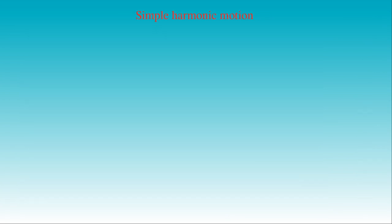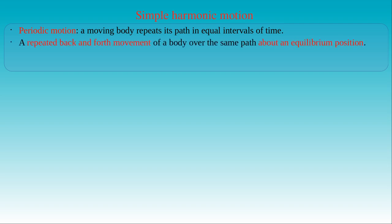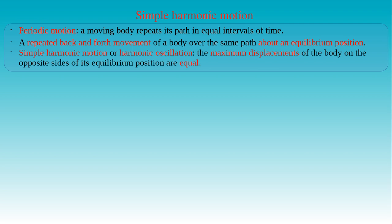Simple harmonic motion is a special case of periodic motion in kinematics. We talk about periodic motion if a moving body repeats its path in equal intervals of time. In the case of simple harmonic motion, a body performs a repeated back and forth movement over the same path about an equilibrium position. The maximum displacements of the body on the opposite sides of its equilibrium position are equal. This repeating motion with an equilibrium position between two turning points is also called harmonic oscillation. The trajectory covers a complete cycle if it leaves its equilibrium position, reaches one maximum, returns to equilibrium, leaves in the opposite direction, reaches its other maximum, and returns to equilibrium again.